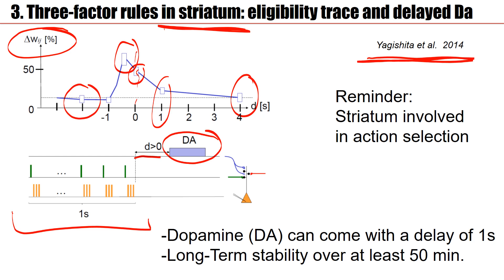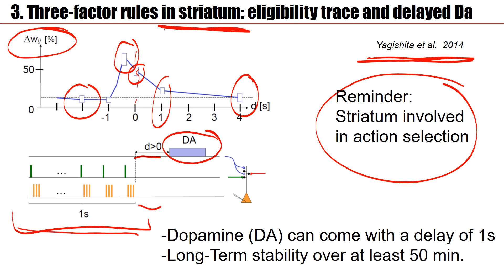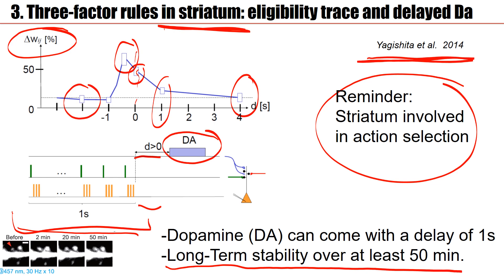These experiments were done in the striatum, which is interesting because the striatum is involved in action selection. The experimentalists could also verify that after this short protocol — lasting a second plus another second of delay for dopamine — the weight change remains for at least 50 minutes. This is seen in figures where the red triangle marks the stimulation protocol. The little blobs are the spines of the synapse. After stimulation, two minutes later this synapse is stronger; 50 minutes later the same synapse is still strong. The changes are induced rapidly and persist over 50 minutes.